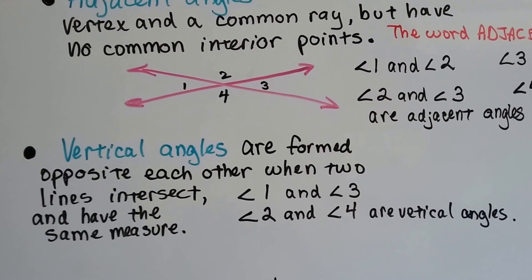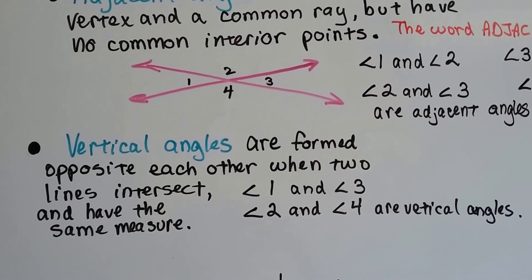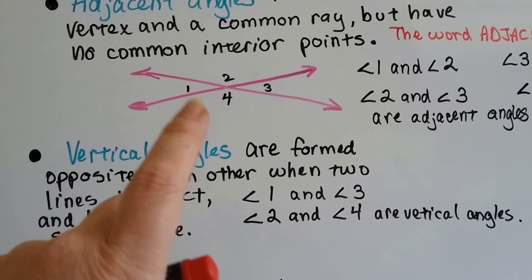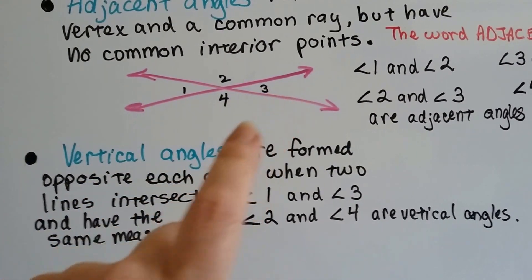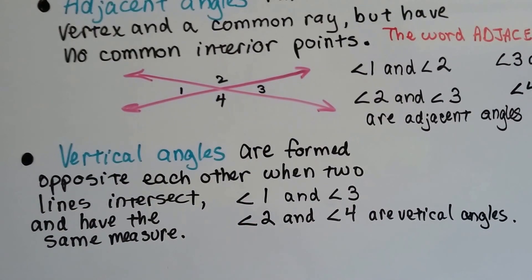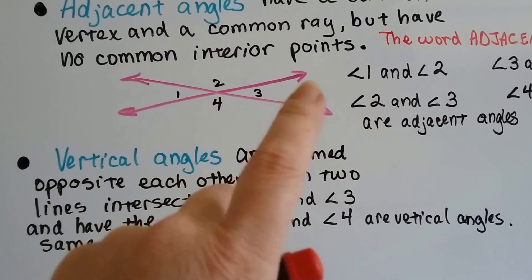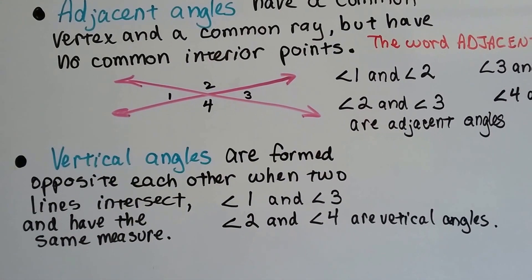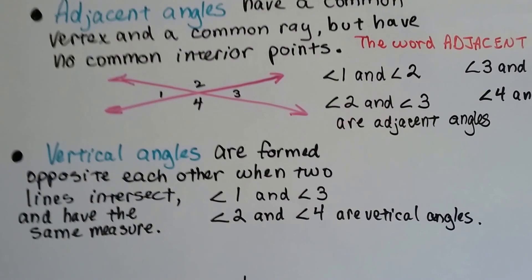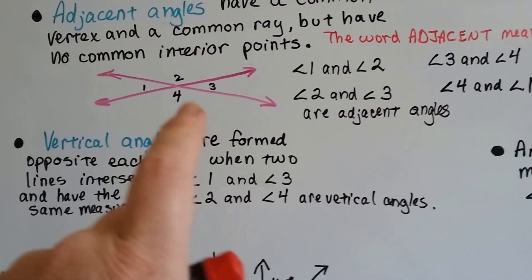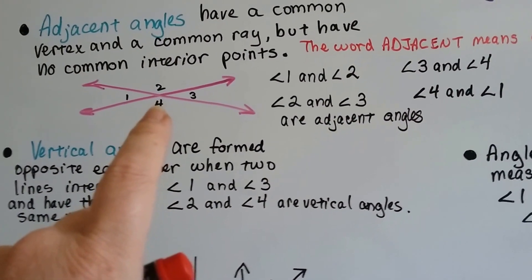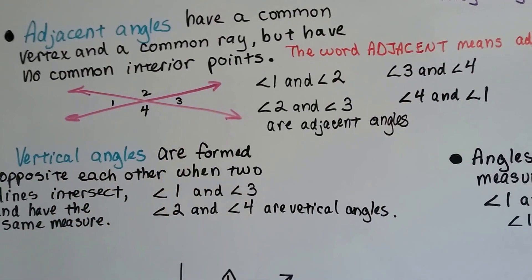Vertical angles are formed opposite each other when two lines intersect. So angles 1 and 3 are vertical, and 2 and 4 are vertical to each other. They're opposite each other. They have the same measure. Vertical angles have the same measure. So angle 2 and angle 4 have the exact same measure, and angle 1 and angle 3 have the exact same measure.